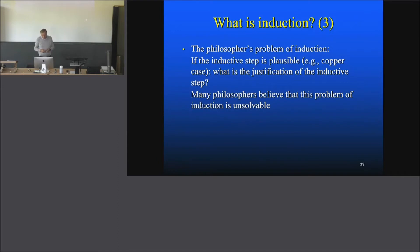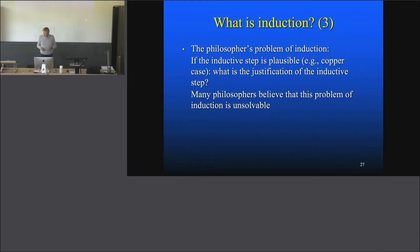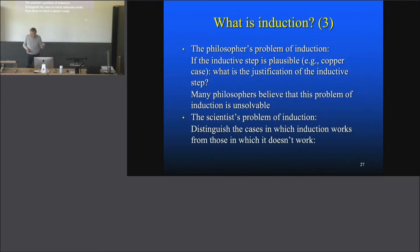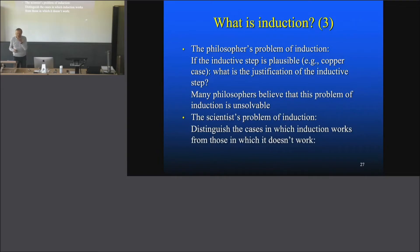Many people — at least in the last 200 years — believe the problem of induction is unsolvable, though recently a colleague claims to have solved it. The scientist's problem of induction is different: scientists don't doubt the possibility of induction. They say induction is possible, but not always. The problem is to distinguish the cases in which induction works from those in which it doesn't. If it works, scientists say fine, let's use it. Whereas philosophers ask why and how we can justify it. Here's an example where induction works: ten pieces of copper conduct electricity, therefore all pieces of copper conduct electricity — you still may be wrong, but people rely on that. Your iPhone works because of copper contacts.